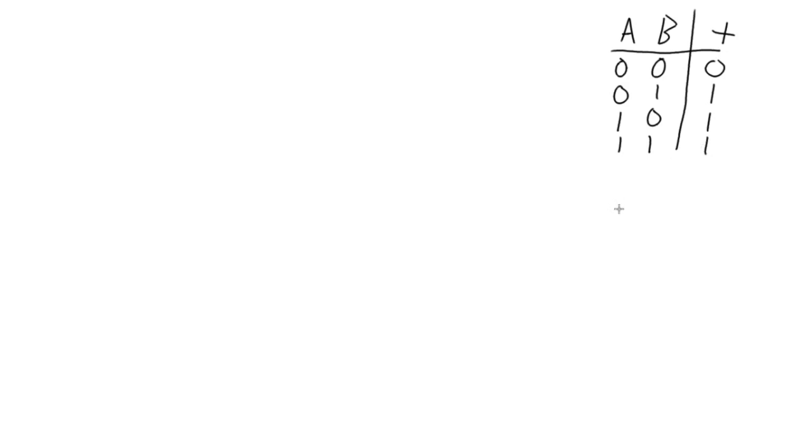And just to draw that out schematically, right? An OR gate looks like this. So this is A OR B, and here's A, and here's B. So this is everything based around the OR gate.